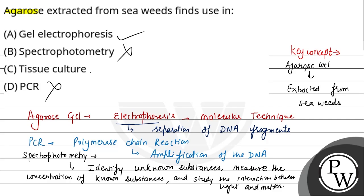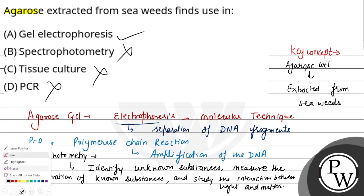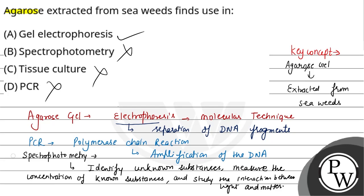Agarose gel is used in electrophoresis and in tissue culture media. The correct answer is option A. I hope you understood it well. Best of luck!